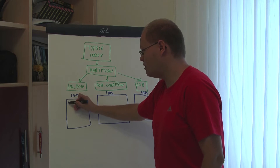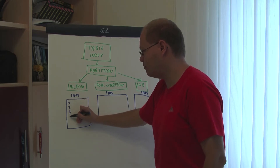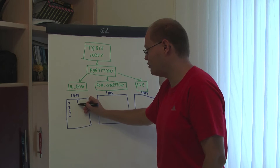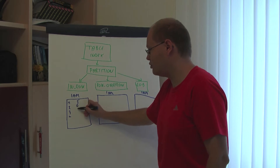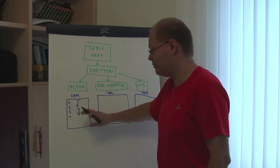So inside the IAM page we have a pointer for the first page, second page, third page, fourth page, fifth page, sixth page, seventh page, and eighth page — one pointer for each of those initial eight pages allocated in the mixed extent.